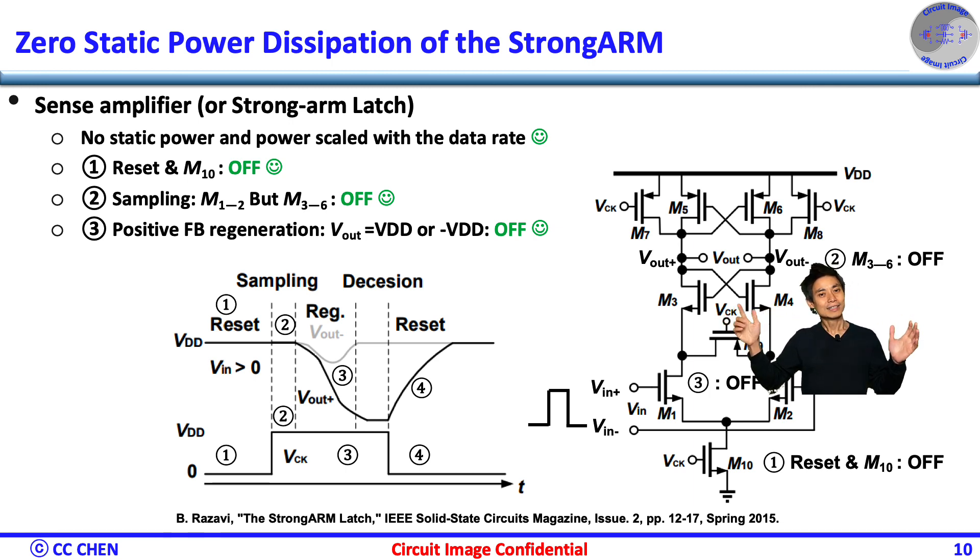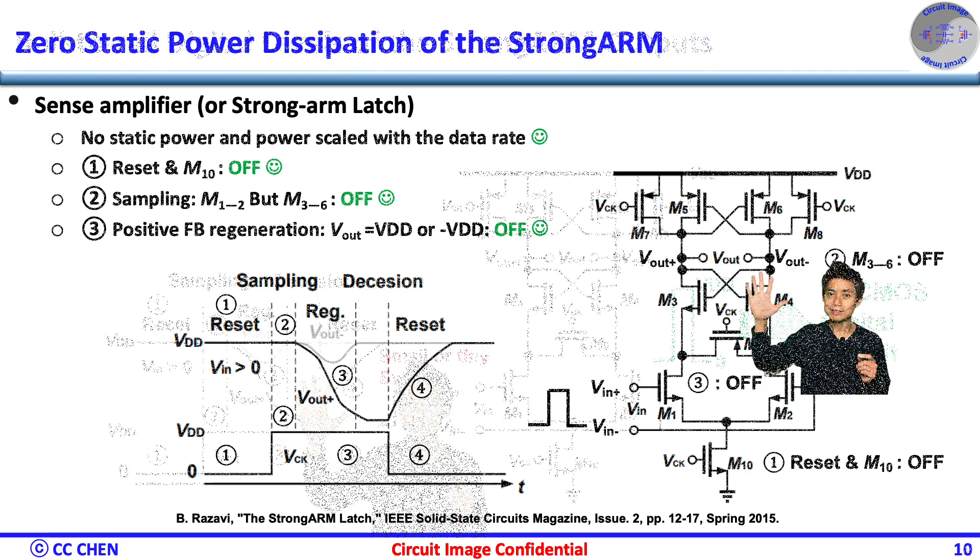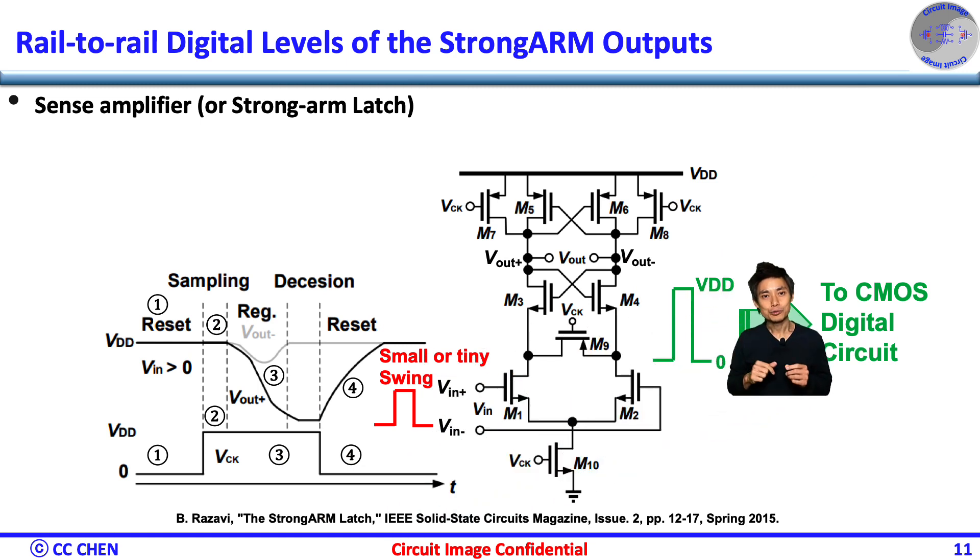What's next? Think about the output swing for five seconds. Obviously, the output swing of a strong-arm latch is rail-to-rail, which makes it compatible with the following digital CMOS logic easily.